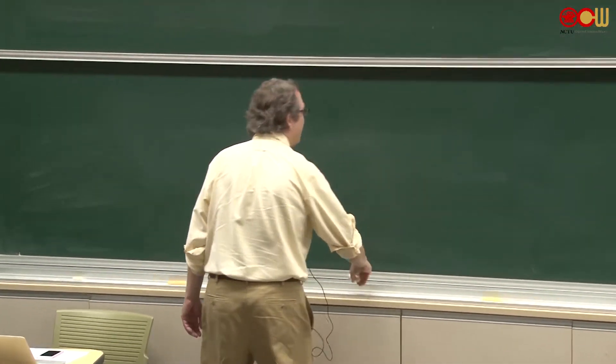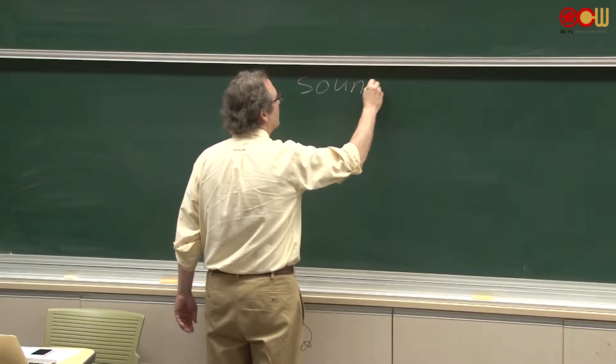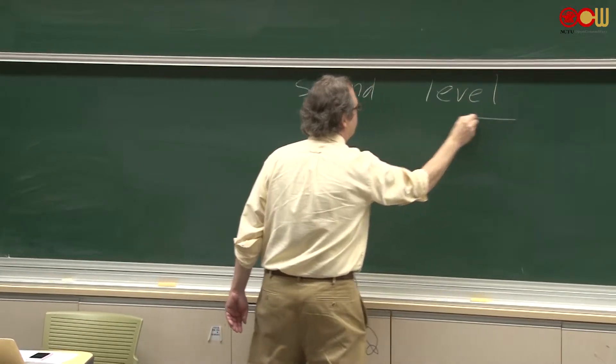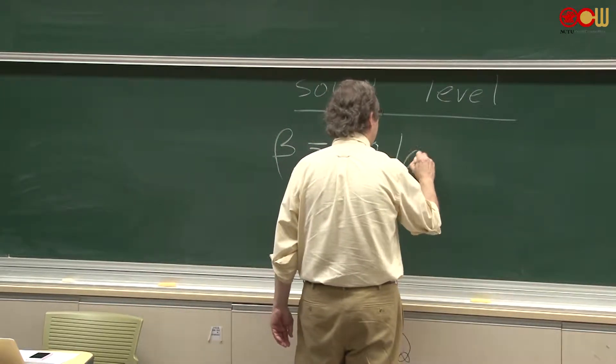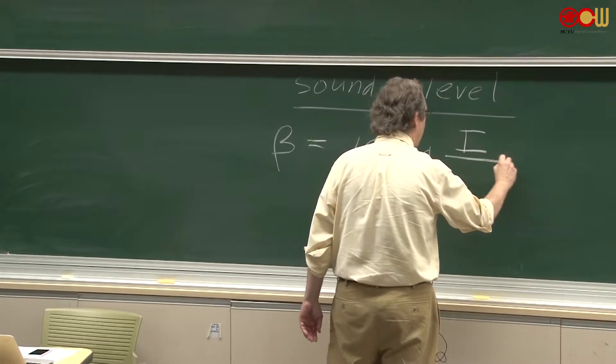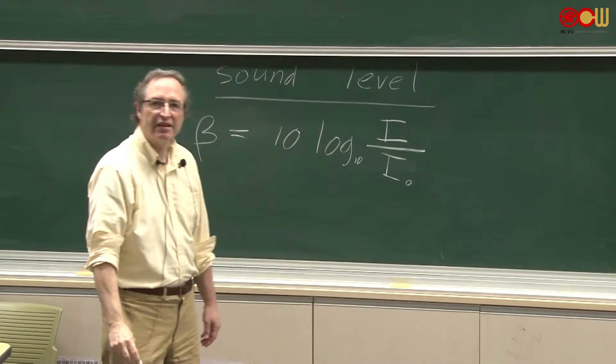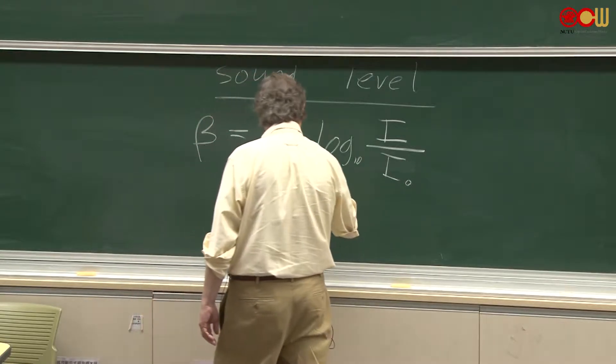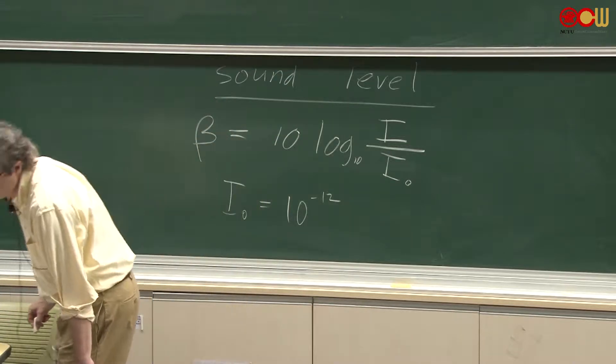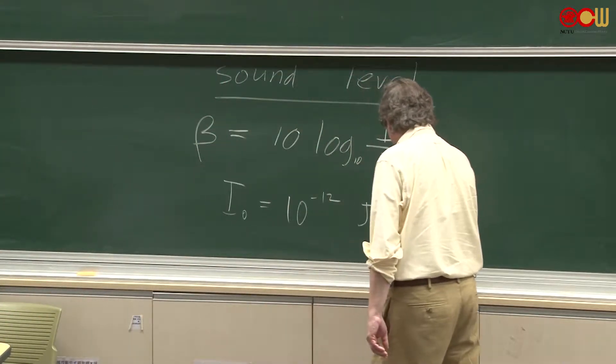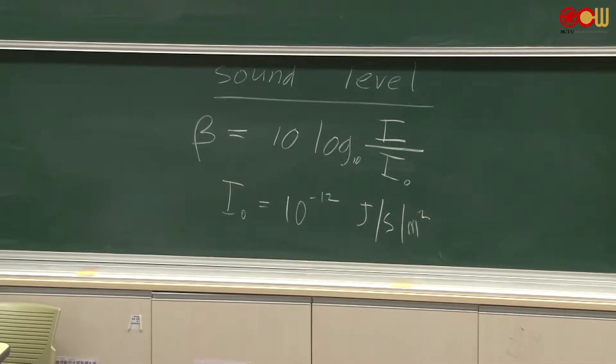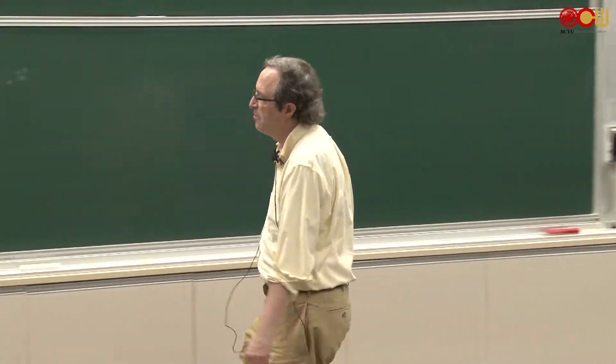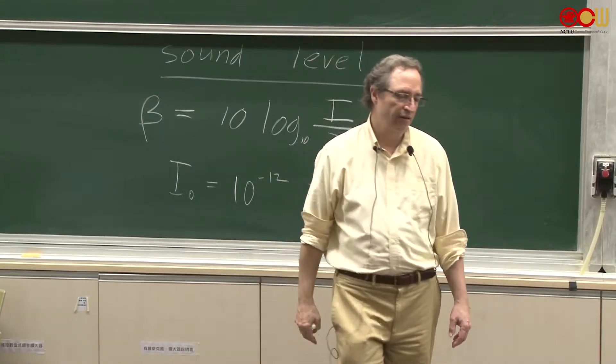And the way we see that is something called the sound level. The sound level, the text uses the symbol beta, is equal to 10 times the log of base 10 of the intensity of the sound divided by some reference intensity. So that's the way intensity is measured, how much energy per second per meter square.